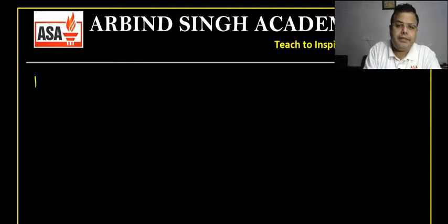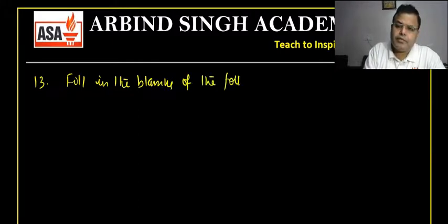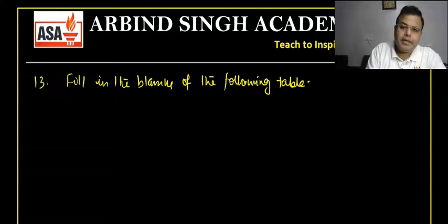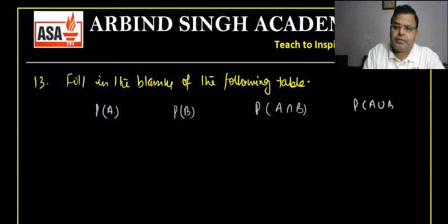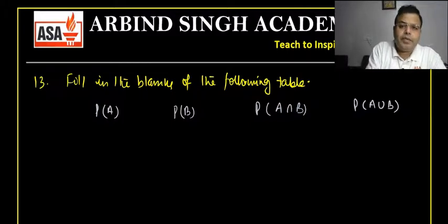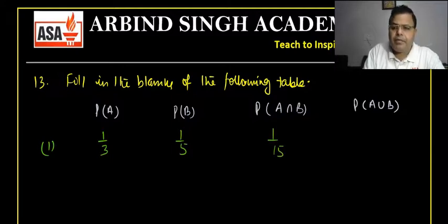Question 13: fill in the blanks of the following table with columns P(A), P(B), P(A ∩ B), and P(A ∪ B). The first part gives P(A) = 1/3, P(B) = 1/5, P(A ∩ B) = 1/15. We need to find P(A ∪ B).